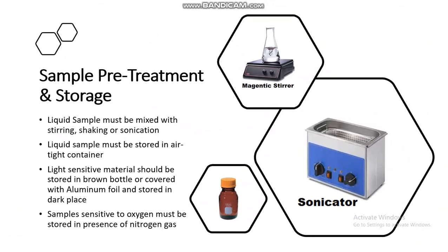Liquid samples must be mixed with stirring — we can use a magnetic stirrer, shaking, or a sonicator for sonication. Liquid samples must be stored in airtight containers to avoid evaporation. Light-sensitive materials should be stored in brown bottles or covered with aluminum foil and stored in dark places. Samples sensitive to oxygen must be stored in the presence of nitrogen flow.